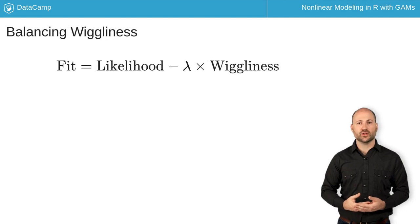How well the GAM captures patterns in the data is measured by a term called likelihood. Its complexity, or how much the curve changes shape, is measured by wiggliness. The key to a good fit is the trade-off between the two. This trade-off is expressed by this simple equation, with a smoothing parameter, or lambda value, controlling the balance.